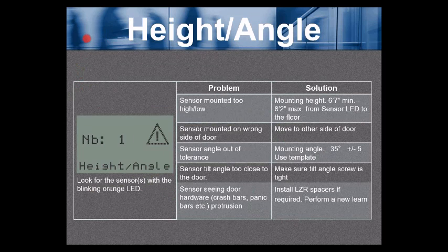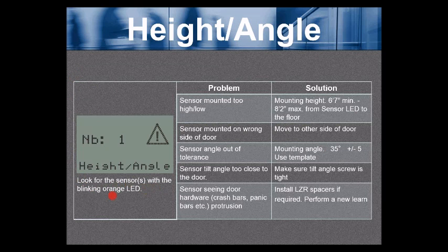Height angle error. Again, look for the sensor or sensors with the blinking orange LED. The problem for the height angle error, the sensor is mounted too high or too low. That's probably the number one cause of a height angle error. The mounting height is 6'7" minimum to 8'2" maximum from the sensor LED to the floor.